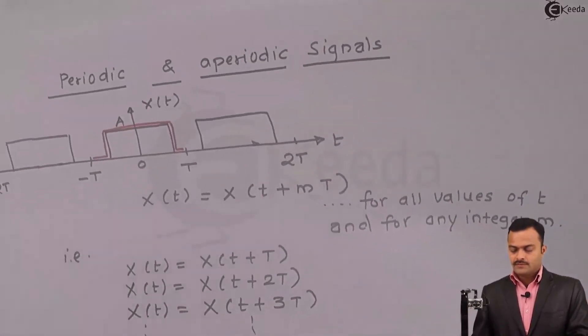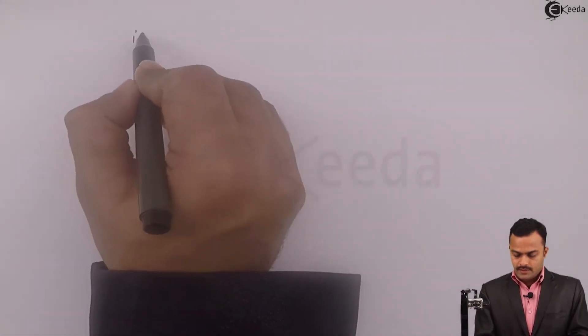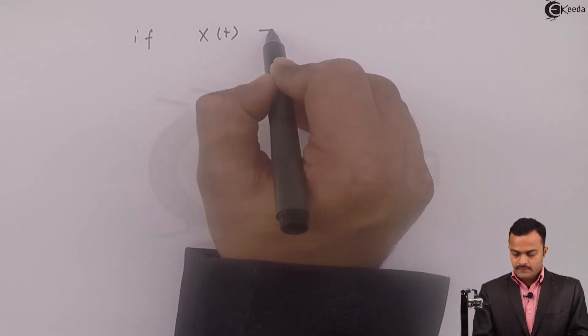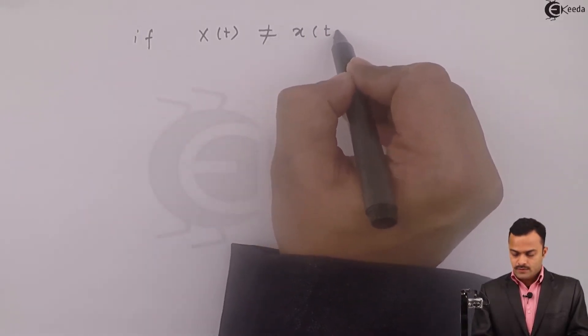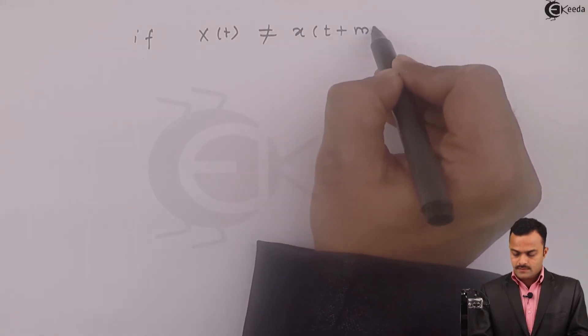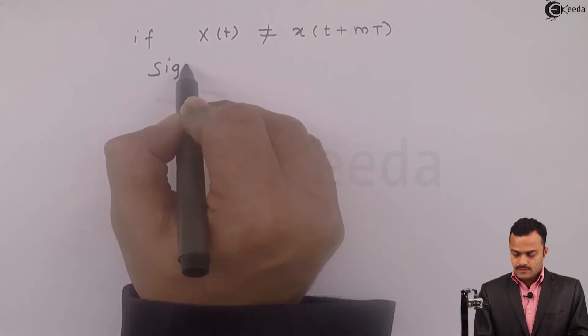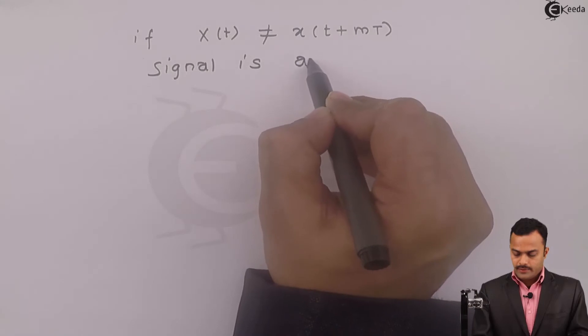Now if the signal which is not repeating itself can be termed as an aperiodic signal. Meaning if I am having x(t) which is not same as x(t plus mT), I can say the signal is non-periodic or aperiodic.